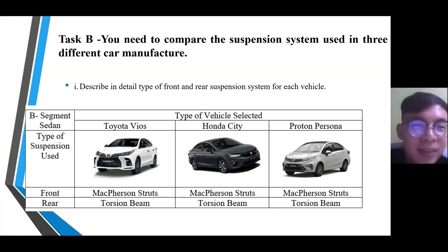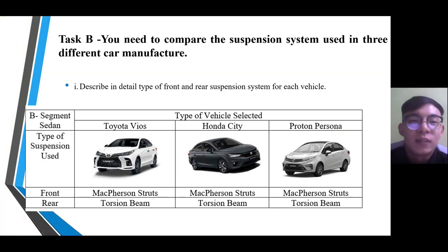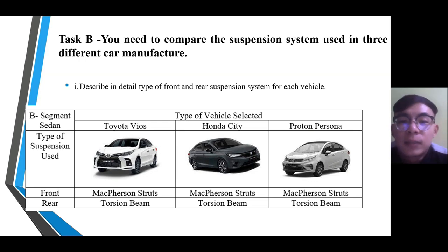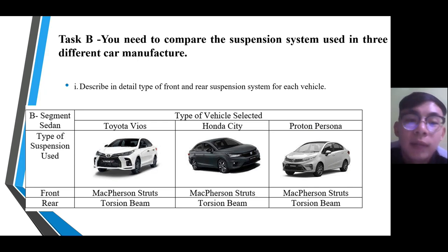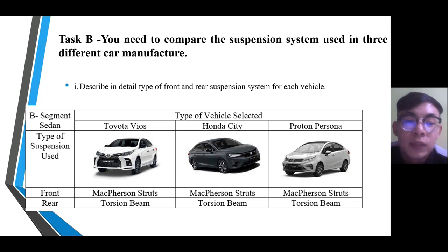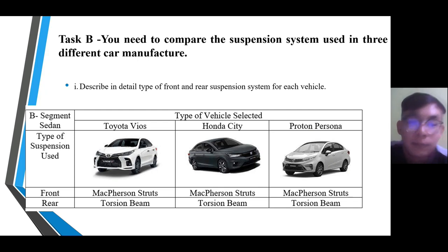For the suspension assignment Task B, we need to compare the suspension systems used in three different car manufacturers. We will describe in detail the type of front and rear suspension system for each vehicle. We chose three base-segment sedans: Toyota Vios, Honda City, and Proton Persona. For the front, all three use McPherson struts, while for the rear, they use the torsion beam.